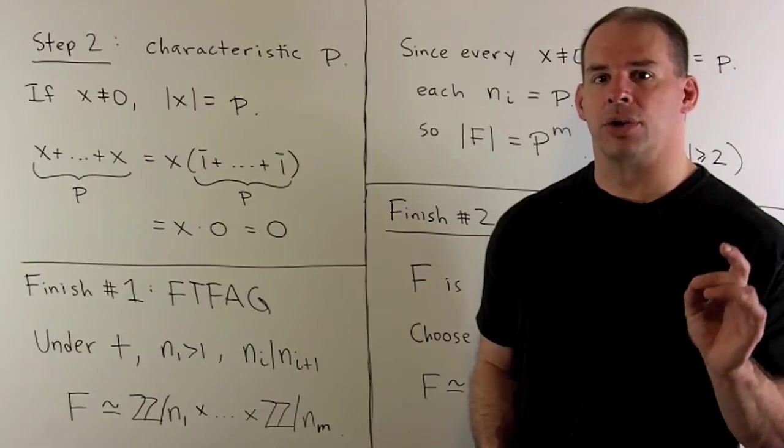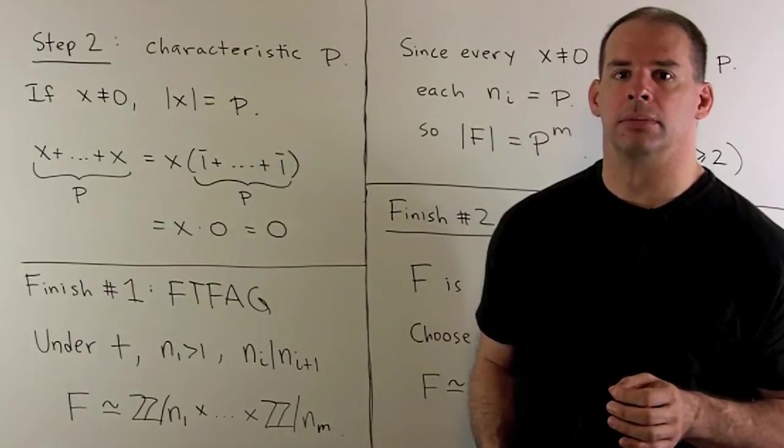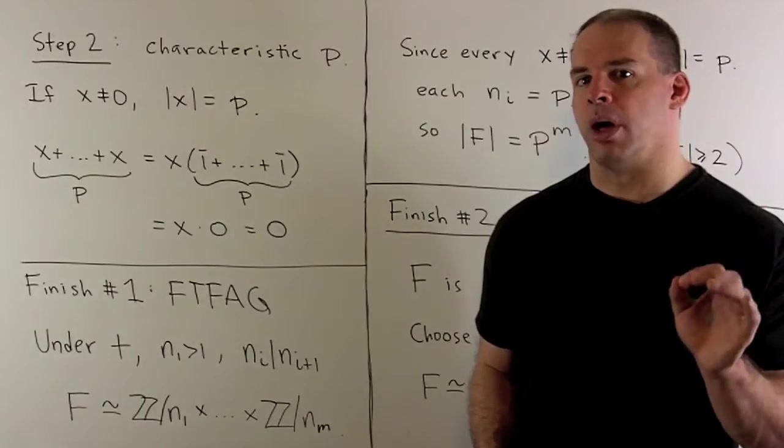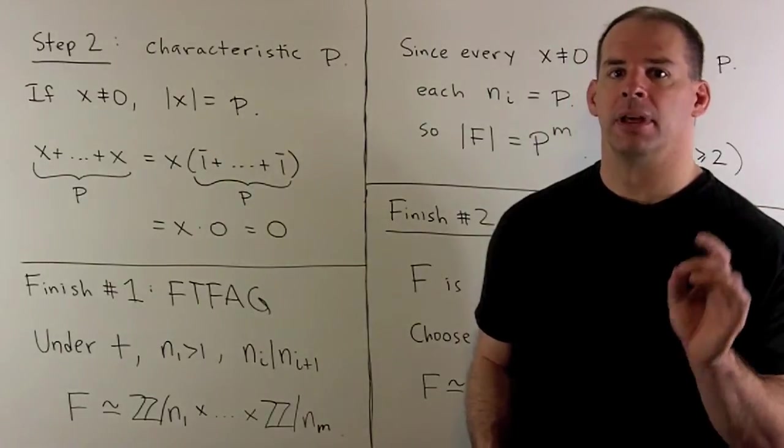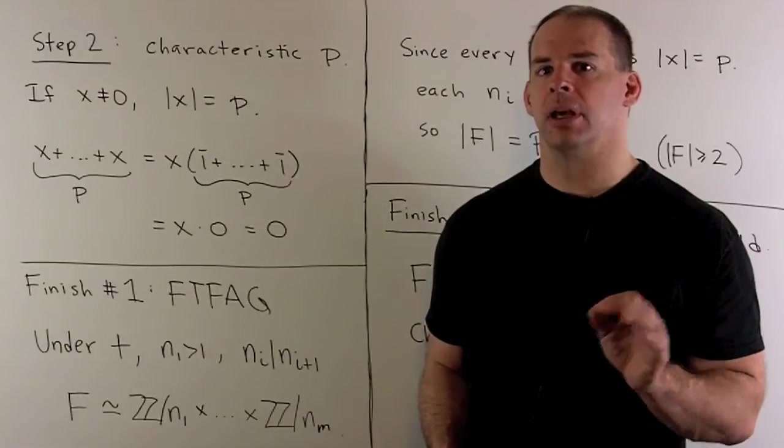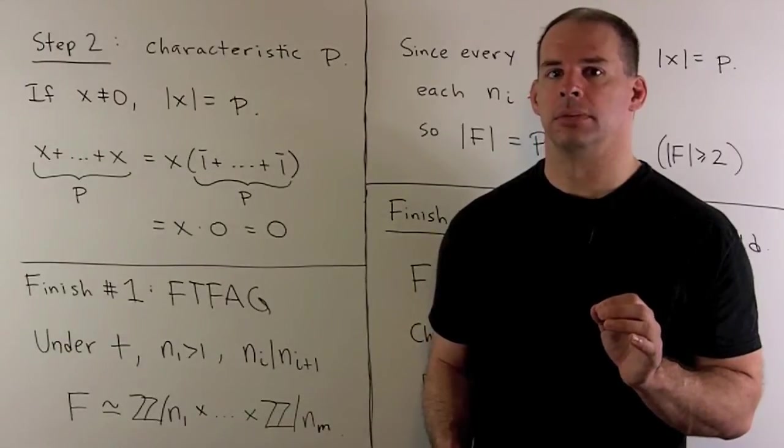Let's show that the characteristic of our field is p. So, for a finite field, the characteristic is the smallest positive integer p, such that, if we take any x, add it to itself p times, we get zero.